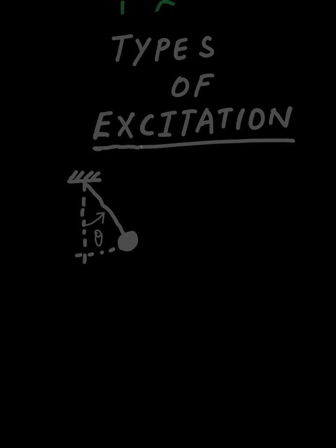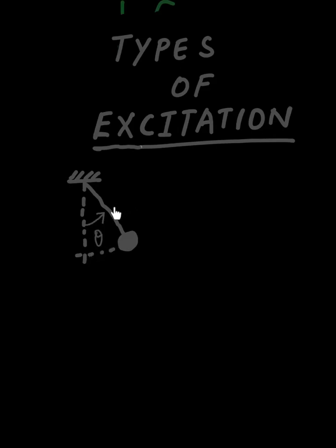Say I have a pendulum. I'm giving it an excitation — I'm just slightly disturbing the system by a theta amount and then leaving it. The key thing to note here is that once we excite the system, we are leaving it as is; we are not disturbing it any further. This is an example of a free vibration problem — we are just providing some initial energy to the system in the form of initial displacements or initial velocities, then leaving the system as it is.